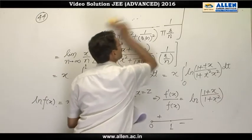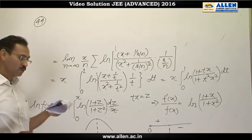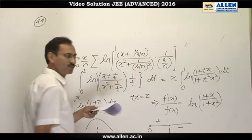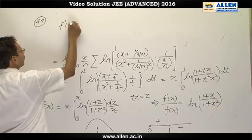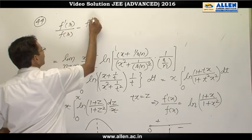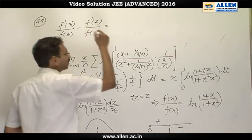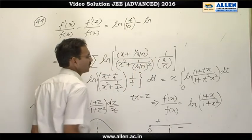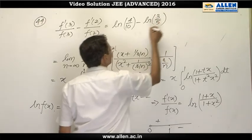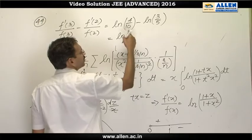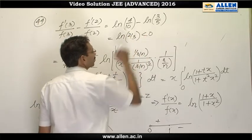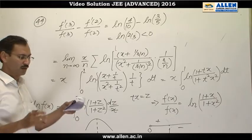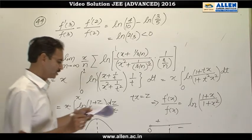To obtain the truthfulness of d, we have to do little more calculation. To verify the correctness of option d, we will use this expression. I will put x equals to 3 and then x equals to 2 and we will subtract them. f dash 3 upon f(3) minus f dash 2 upon f(2) is equal to ln 4 by 10 minus ln 3 by 5, which is ln 20 by 30 or 2 by 3, which is negative. As it is negative, therefore, f dash 3 upon f(3) is smaller than f dash 2 upon f(2) and option is greater. That is why it is wrong option. So the correct answers are b and c.